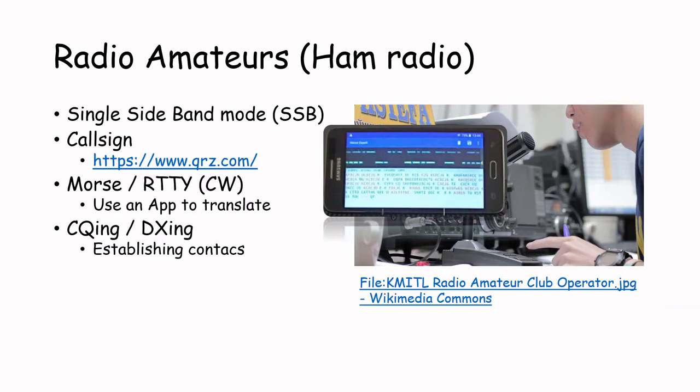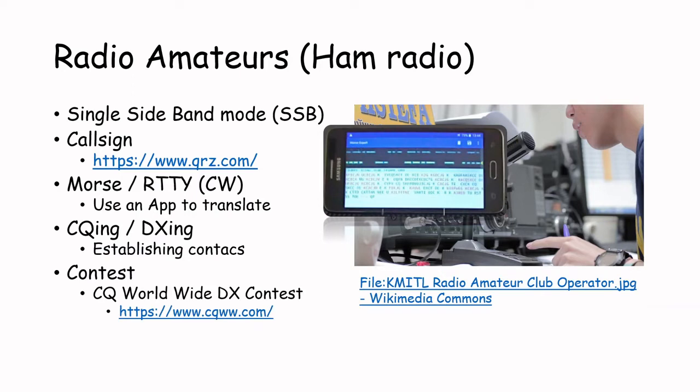CQing and DXing is about making as many connections in a few hours as possible. When a connection is made between two operators, they shortly exchange information with each other — for example, a so-called signal report about the quality of reception. When there is a contest, all operators online try to make the most possible connections in 24 or 48 hours. For you as a listener, the most interesting are the chat rooms, where radio amateurs gather together to discuss different topics, just for fun.